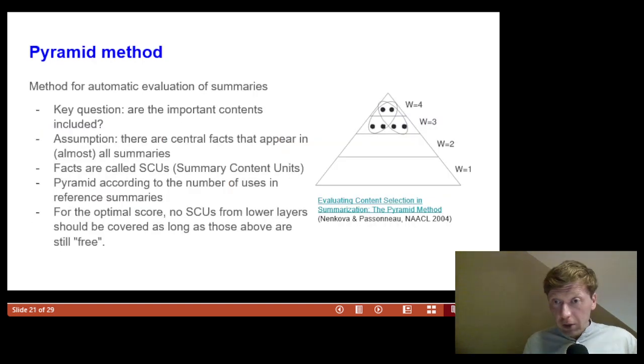I will not explain the pyramid method in detail. Just this. The method captures the content-based similarity of the summaries and works by matching SCUs, you remember, summary content units, with reference summaries. For the evaluation of the summaries, the distribution of the SCUs is crucial. A summary under evaluation in order to get a high pyramid score should get SCUs from high layers of the pyramid. In the figure,